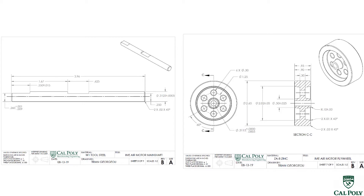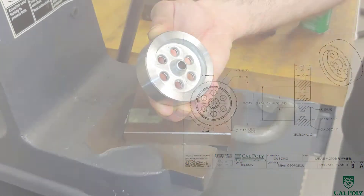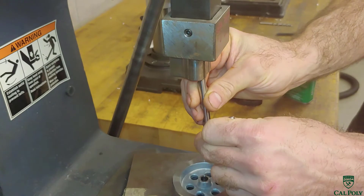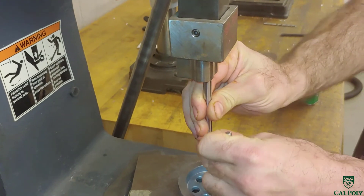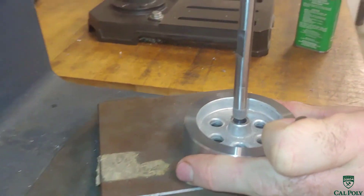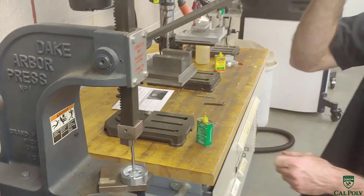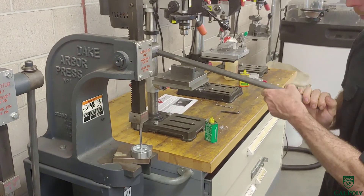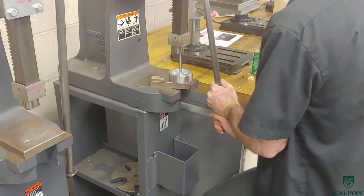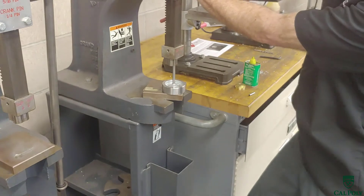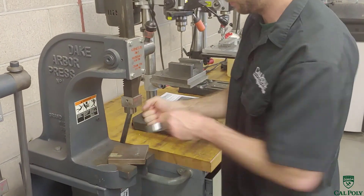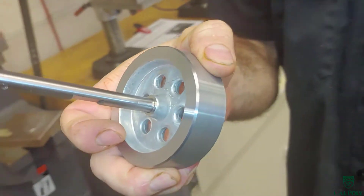Now on the engineering side of it, I press fit the parts by placing the shaft in the fixture on the press, then lining up the hole on the flywheel and using the arbor press to press the parts together. Once they're pressed together, this is a permanent way to attach things — the main shaft is now permanently attached to the flywheel.